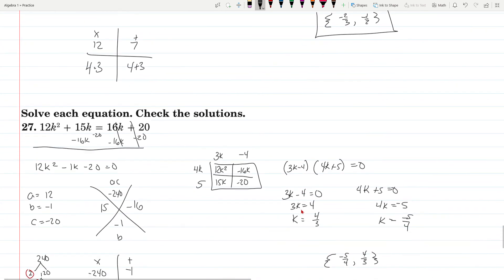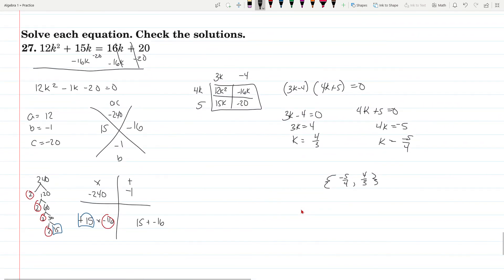Now problem 27 in the first recording of this was not pretty. But we subtracted 16k, subtract 20 from both sides. You're left with 12k squared minus 1k minus 20 equals 0. So your A is 12, your B is negative 1, and your C is negative 20. So you're looking for a product of negative 240 that adds up to be negative 1, which means the numbers have to be right next to each other. In the original recording, I was really struggling to find 240 because it's a big number.